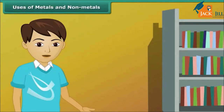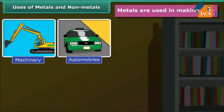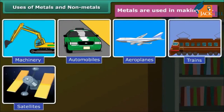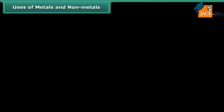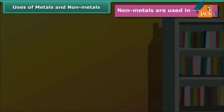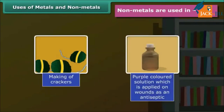We can see a displacement reaction in which one metal is displacing another metal from its compound. Till now we have learned about the physical and chemical properties of metals and non-metals. Now let's move on to another important topic — the uses of metals and non-metals. Metals are hard in nature, so they are used in making machinery, automobiles, aeroplanes, trains, satellites, industrial gadgets, cooking utensils, and water boilers. Non-metals are used in fertilizers, water purification, life-supporting air, crackers, and as a purple-colored antiseptic solution on wounds.